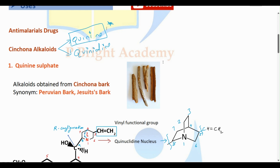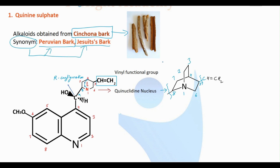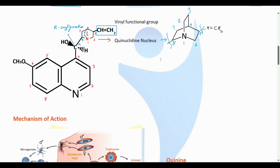Quinine is basically derived from cinchona bark. This is a picture of cinchona bark. There are two important synonyms for cinchona bark: one is Peruvian bark and the other one is Jesuit bark. These two synonyms have been seen as MCQ questions in various competitive exams, so it will be good if you can remember them.